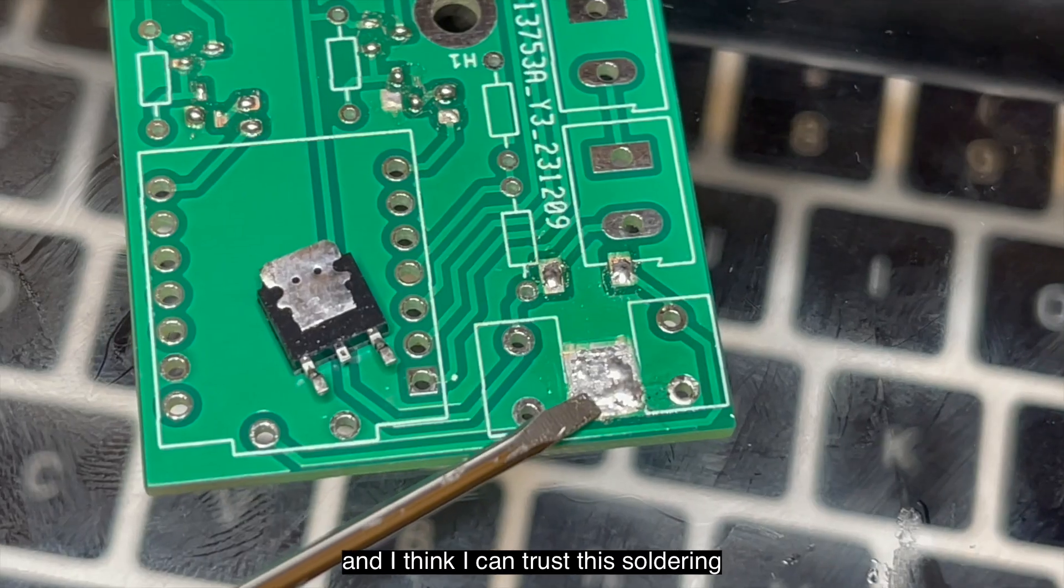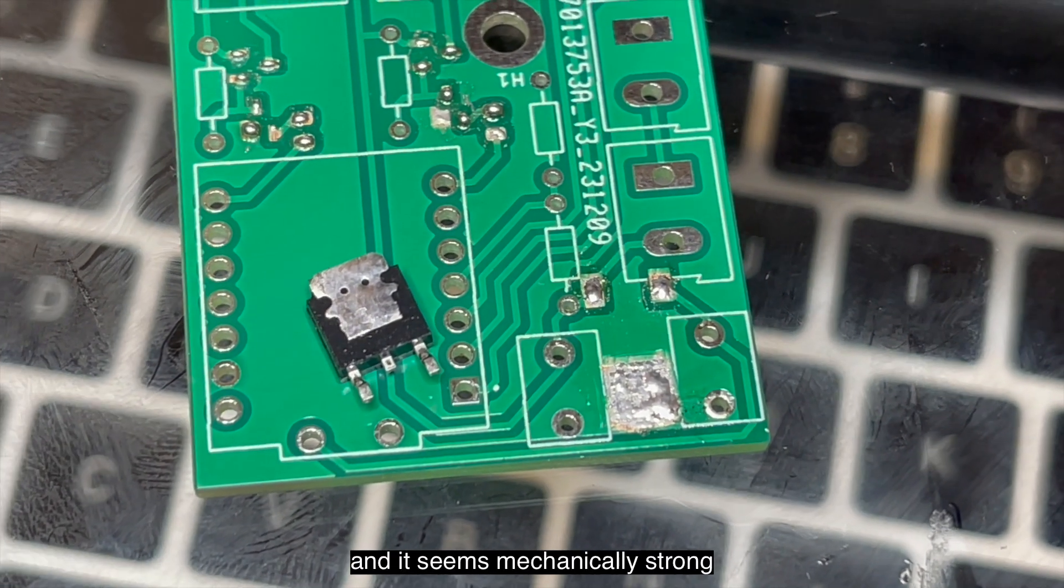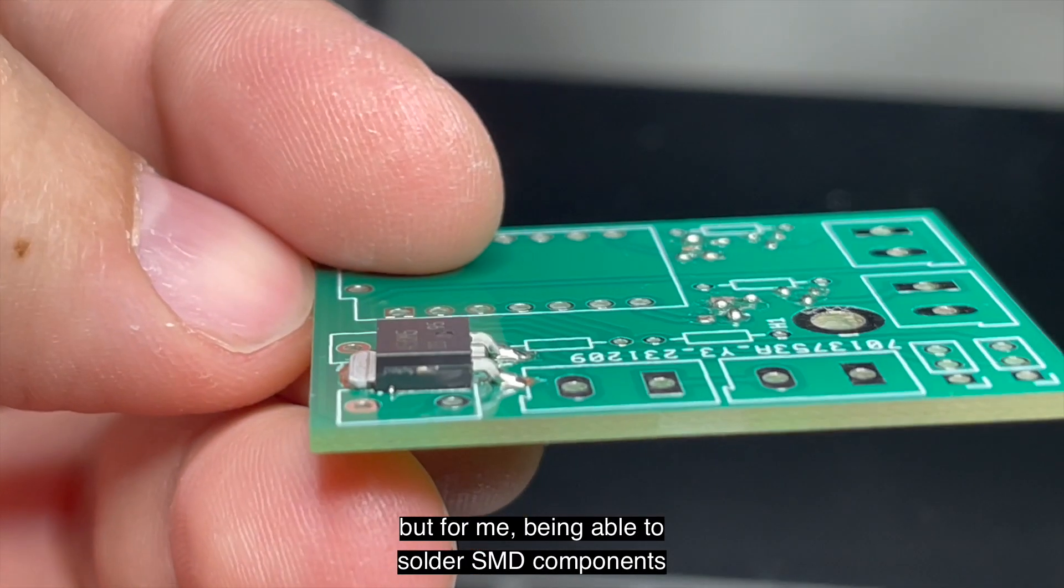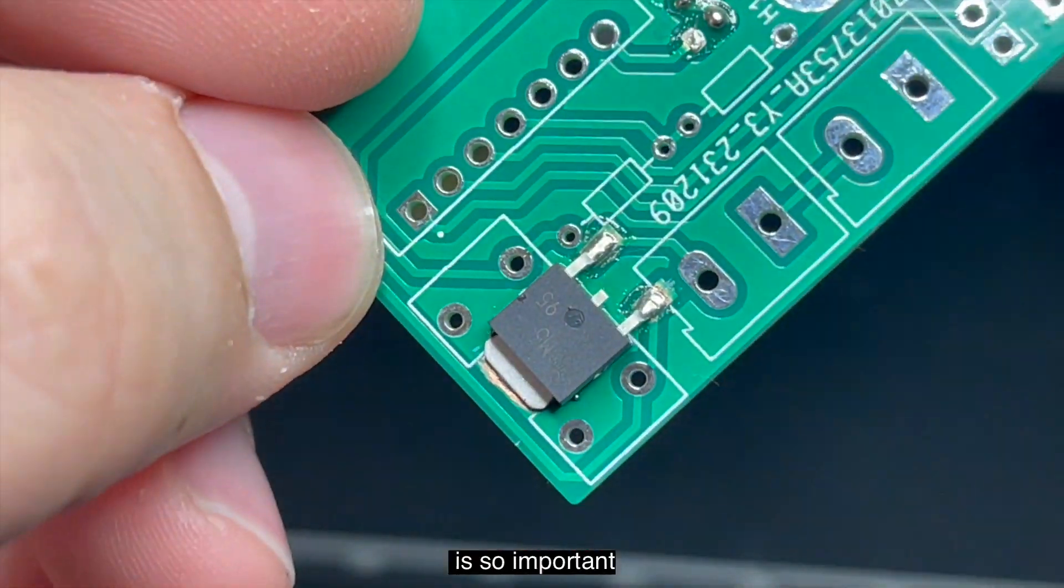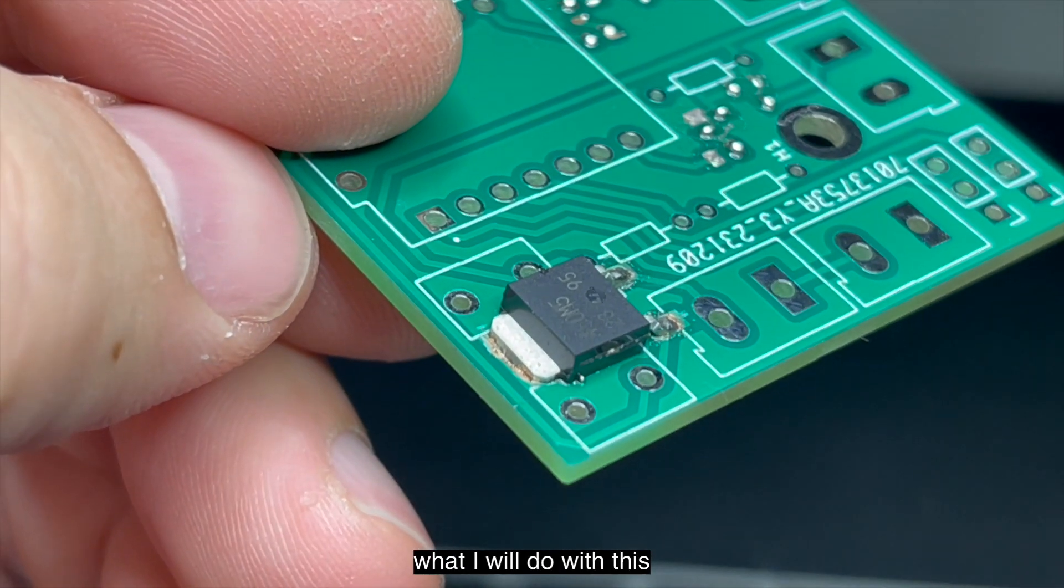And I think I can trust this soldering both for its electrical properties and it seems mechanically strong. This might look like a small deal, but for me being able to solder SMT components in bulk at home is so important. I'm so happy and I can't wait to see what I will do with this.